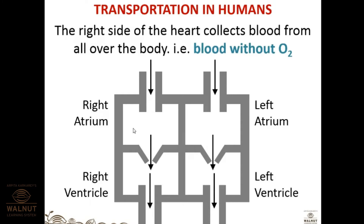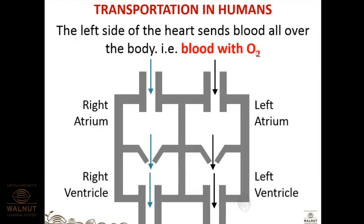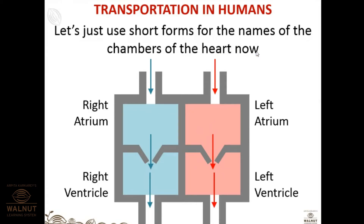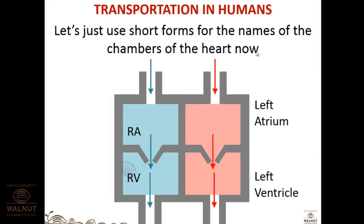The right side of the heart collects deoxygenated blood from all over the body. The left side of the heart sends oxygenated blood all over the body. So left atrium receives oxygenated blood and right atrium receives deoxygenated blood. Short forms used: RA for right atrium, RV for right ventricle, LA for left atrium, LV for left ventricle.